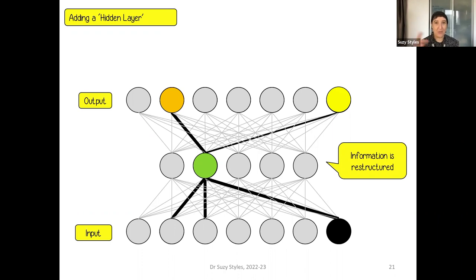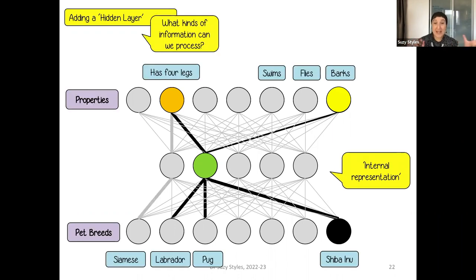So what might this mean for the way that we can organize information about real world things, object knowledge or category knowledge? Well, to give a simple example, input nodes might be pet breeds. So we might have things like a Siamese, which is a type of cat, a Labrador, a pug, a Shiba Inu, which are all types of dog. And for some of those nodes, they might be activating some kind of an internal representation in the hidden layer so that the outcome of that system might activate features such as has four legs and other properties like sometimes barks as opposed to sometimes swims or sometimes flies. So this is just a very simple illustration of the idea that information could be held in a kind of parallel distributed processing system that allows inputs of different kinds to generate internal representations that allow us to access outputs such as semantic feature information.